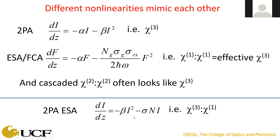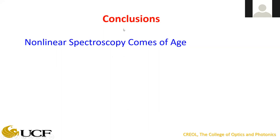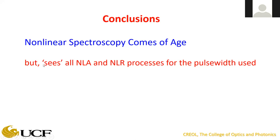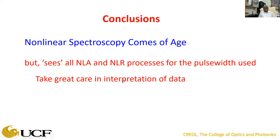The z-scan sees all the nonlinear absorption and refractive processes. The beam deflection experiment is sensitive to all the nonlinear absorptive processes — it's like a regular excite-probe — and sensitive to all the nonlinear refractive processes. You've got to know what's going on for whatever pulse width you use. You need to take great care in the interpretation of that data — and that's what keeps me in business.